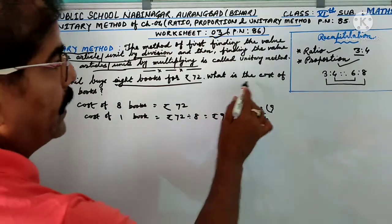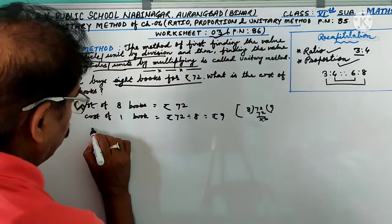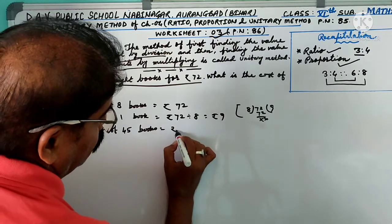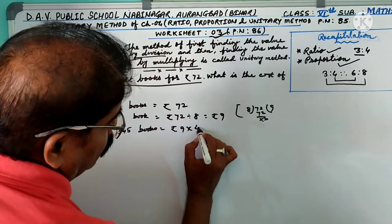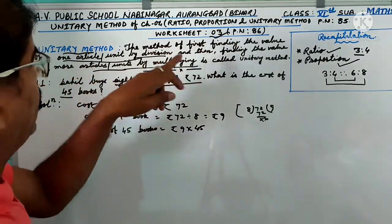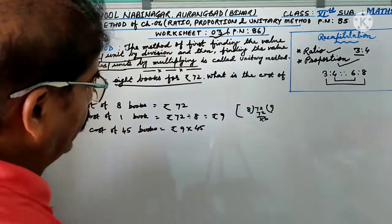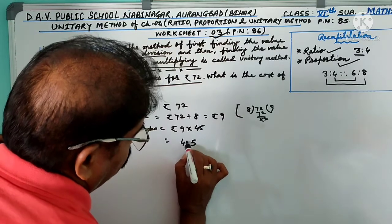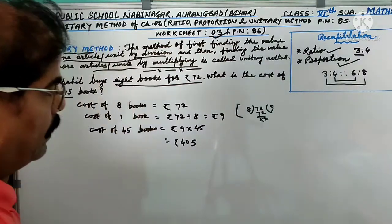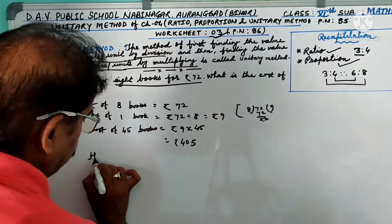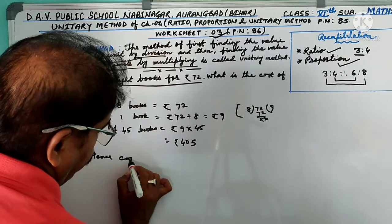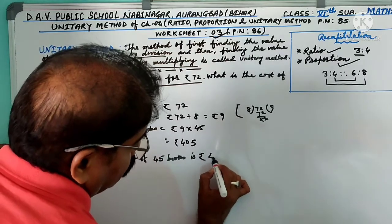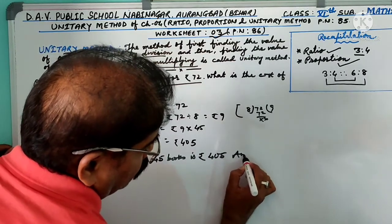And what is the cost of 45 books? Cost of 45 books equal to rupees 9 into 45. Finding more articles by multiplying. You get 9 times 45: 9 times 5 is 45, 4; 40. So cost of 45 books is 405. Cost of 45 books is rupees 405. This is your answer.